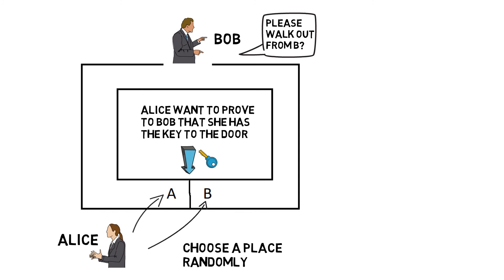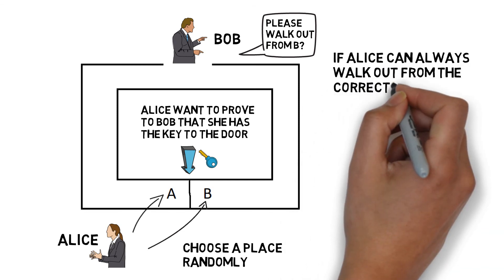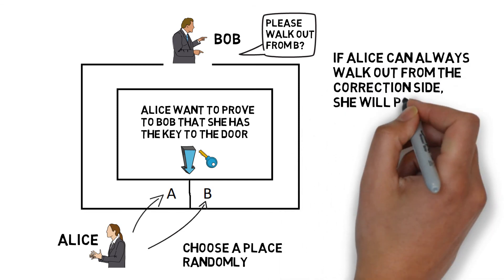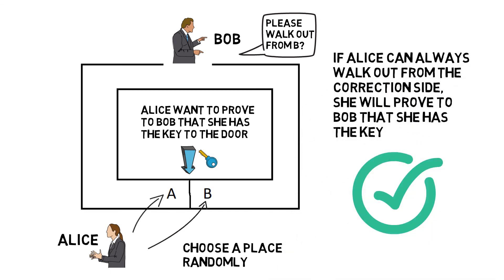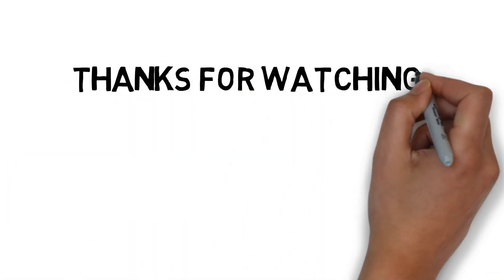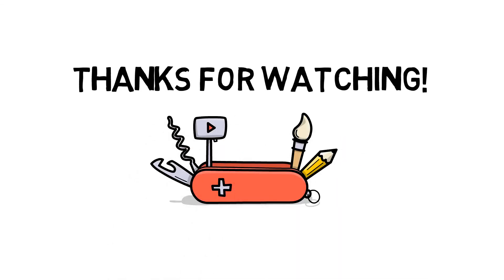For example, if Alice is standing at location A and Bob asks her to walk out via the B side, she needs to use the key to open the door. After a few rounds, Bob will believe that Alice has the key to the door, and Alice does not need to show the key to Bob. Thanks for watching — if you like the video, please hit the like button or subscribe for more interesting topics.